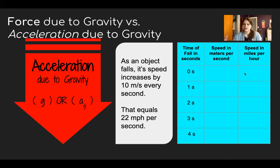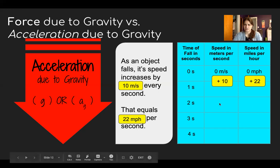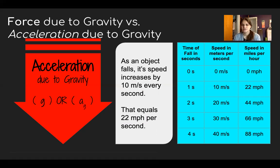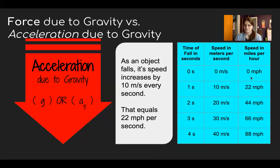In this table, fill out how fast an object would be moving each second, assuming a starting speed of zero. In meters per second, add 10 m/s each second; in miles per hour, add 22 mph each second. Checking your work: after 1 second — 10 m/s, then 20, 30, 40; in mph — 0, 22, 44, 66, 88. Speed increases constantly and gradually, not in jumps — a steady increase over time.